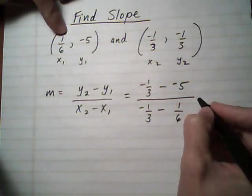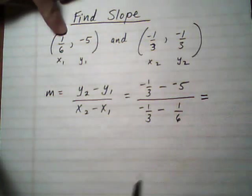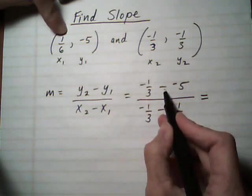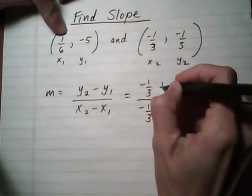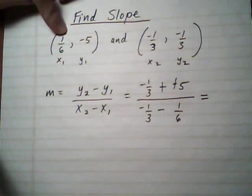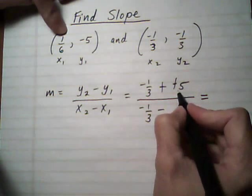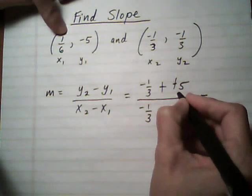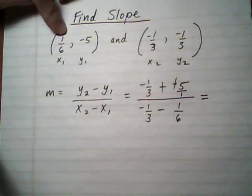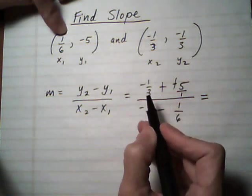Now we just evaluate what we have. It's a little bit messy, but I'll take it step by step. The first thing we can do is we've got a double negative, so let's plus it out. And the next thing I would do is write this integer 5 as a fraction, so put it over 1, just so it's a little bit easier to work with with the other fraction.